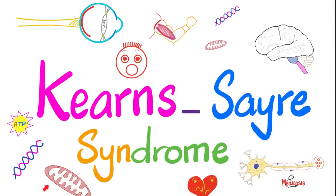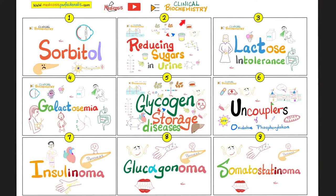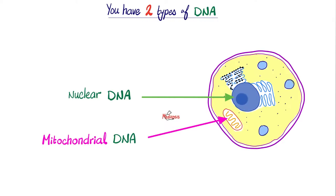Today's topic is about a mitochondrial disease known as Kearns-Sayre syndrome, which affects the eye, the heart, and the muscles. Please watch the videos in this clinical biochemistry playlist in order. Remember, you have two types of DNA: the DNA that's in the nucleus, and mitochondrial DNA in your mitochondria.